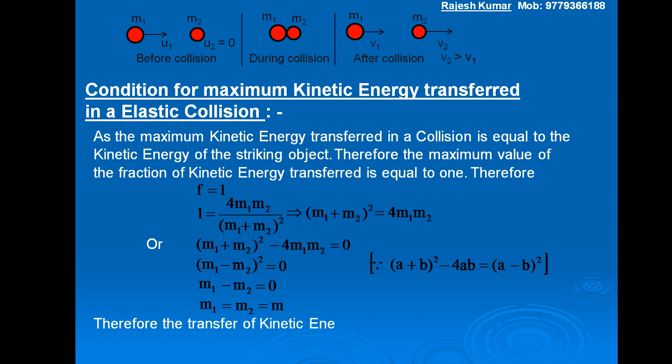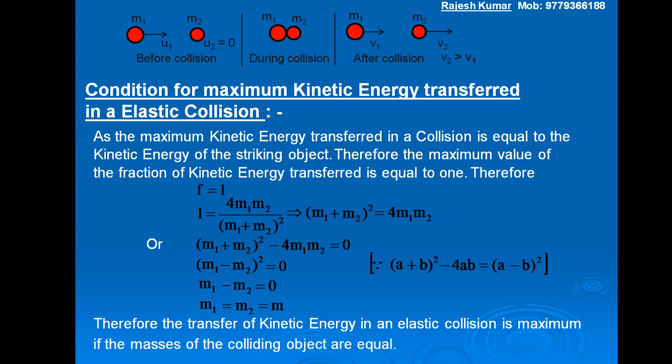Therefore, the transfer of kinetic energy in an elastic collision is maximum when the masses of the colliding objects are equal. In this case, F = 1 — that is, the fraction of kinetic energy transferred equals 1 when the masses are equal. This is also called the maximum power theorem. Thank you very much.